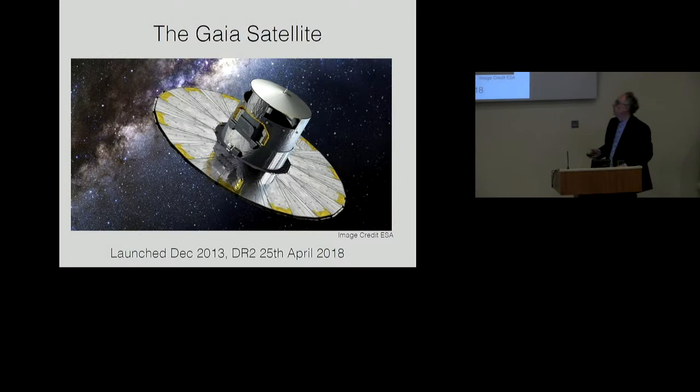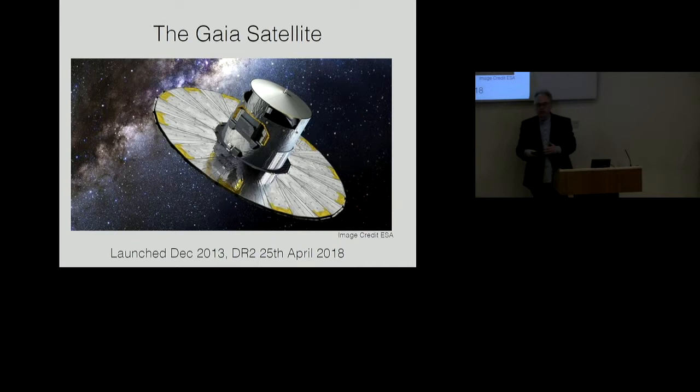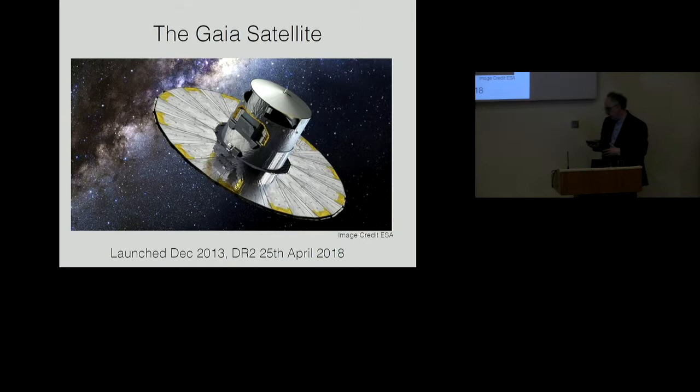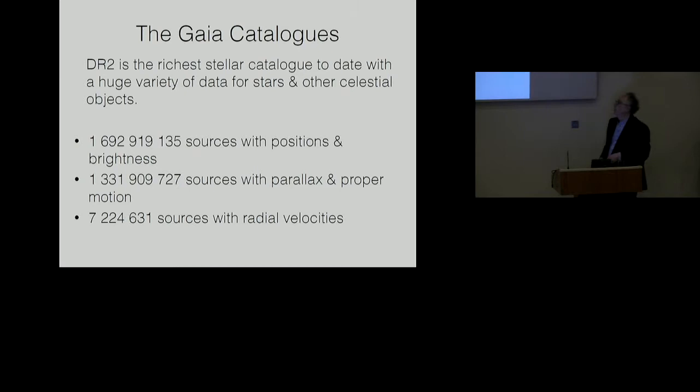I shall be talking about achievements of the Gaia satellite, which is a European Space Agency satellite launched in December 2013. It's a scanning satellite that repeatedly monitors parts of the sky, recording positions of stars. There was a revolutionary data release, data release two, less than a year ago.